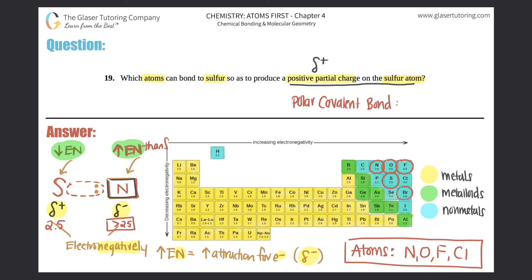For a polar covalent bond, the electronegativity difference has to be between 0.4 and 1.8. Sulfur minus bromine gives 2.8 − 2.5 = 0.3, which is outside that range, so bromine is excluded. Your four atoms are nitrogen, oxygen, fluorine, and chlorine — and that's the answer.